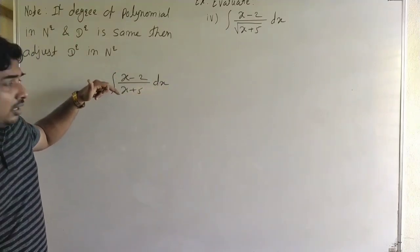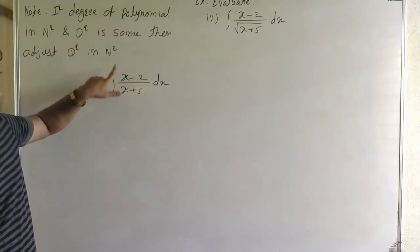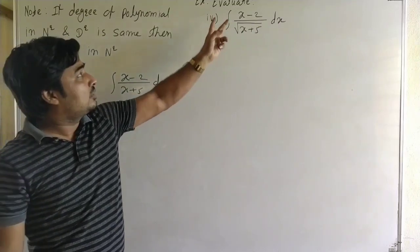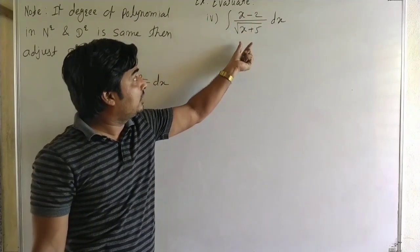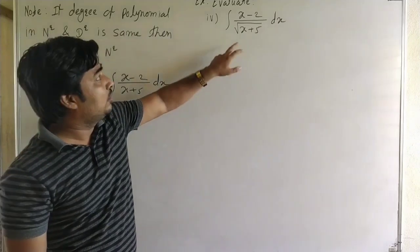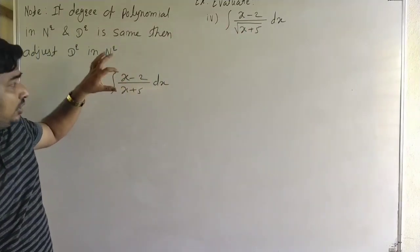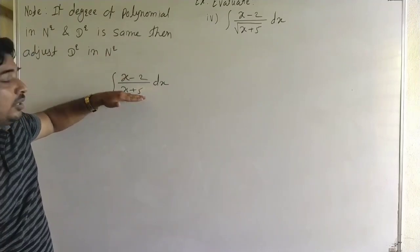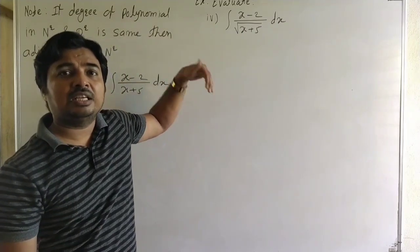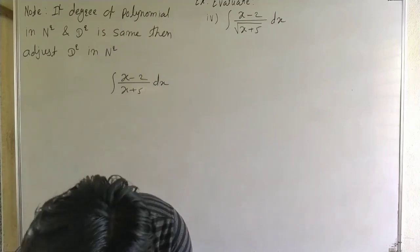When the degree of the polynomial in the numerator and denominator is the same, we adjust the denominator in the numerator. But here the degree is not the same because the numerator is the polynomial (x minus 2) and the denominator is the under root function √(x+5). However, the degrees of (x minus 2) and (x plus 5) are the same, so we adjust the under root function (x plus 5) in the numerator.